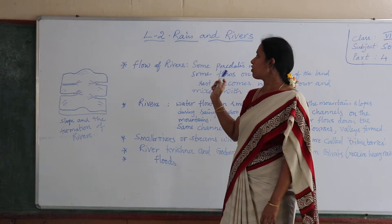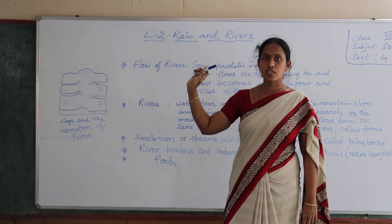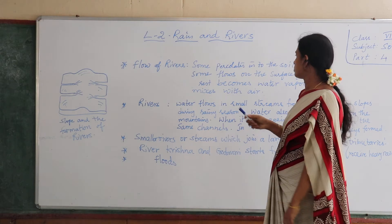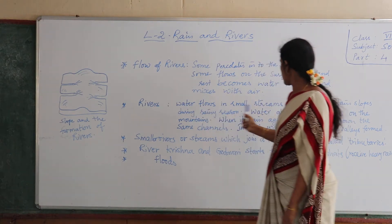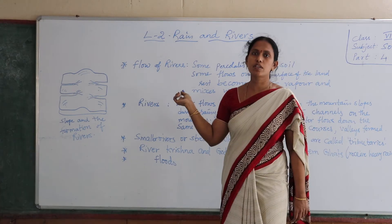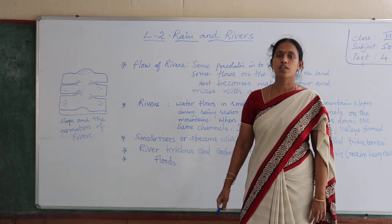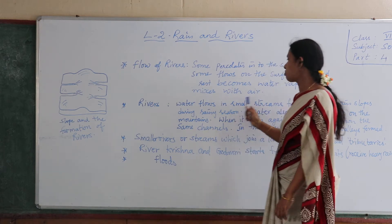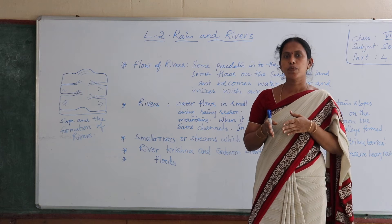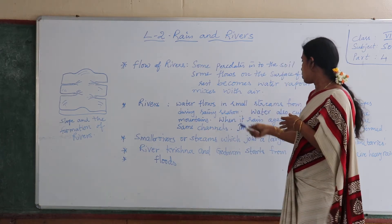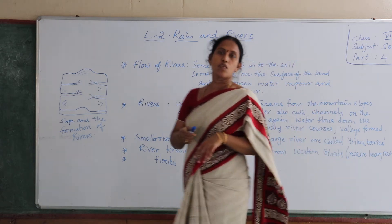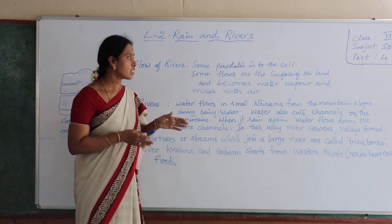Now we are going to learn about the flow of rivers and how rivers form. Water flows in small streams from mountain slopes during the rainy season. Water flows from mountains like small streams first, and during rainy season this water comes from the mountains.